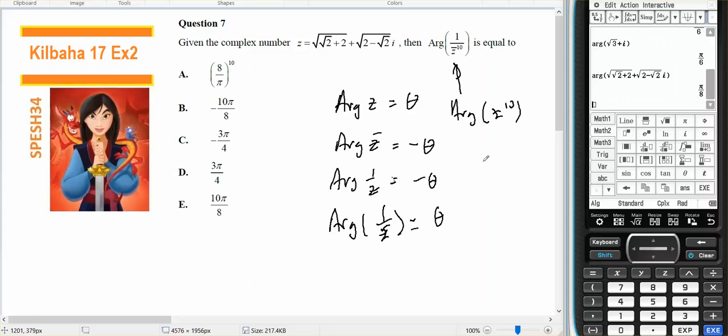So the argument of z is pi over 8. Therefore, the argument of z to the 10th power will be 10 times pi over 8, which is the same as 5 pi over 4, or minus 3 pi over 4. So minus 3 pi over 4 is the correct answer.